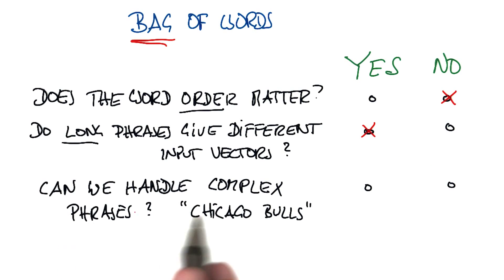Can we handle complex phrases? Right now we can't, unless you make extra buckets for those, which makes it a bit more difficult to pre-process. Chicago Bulls would count one for Chicago and one for Bulls.